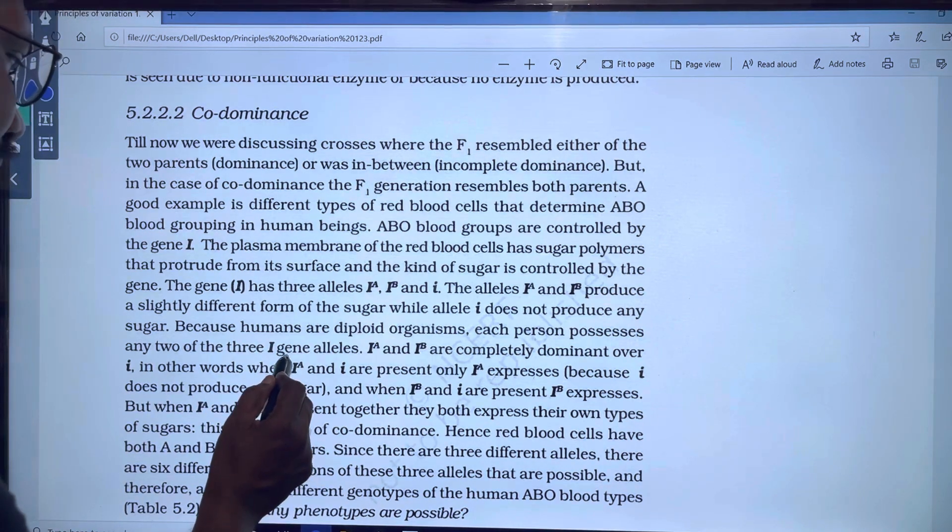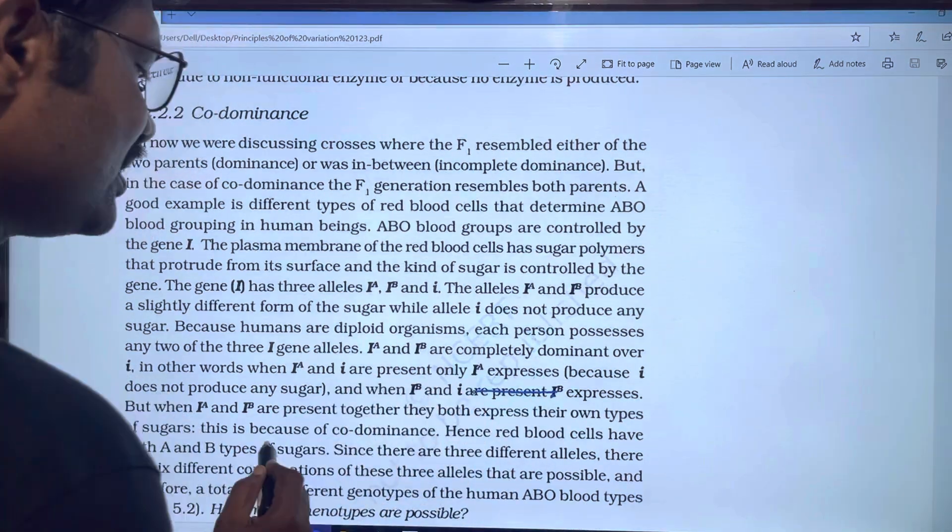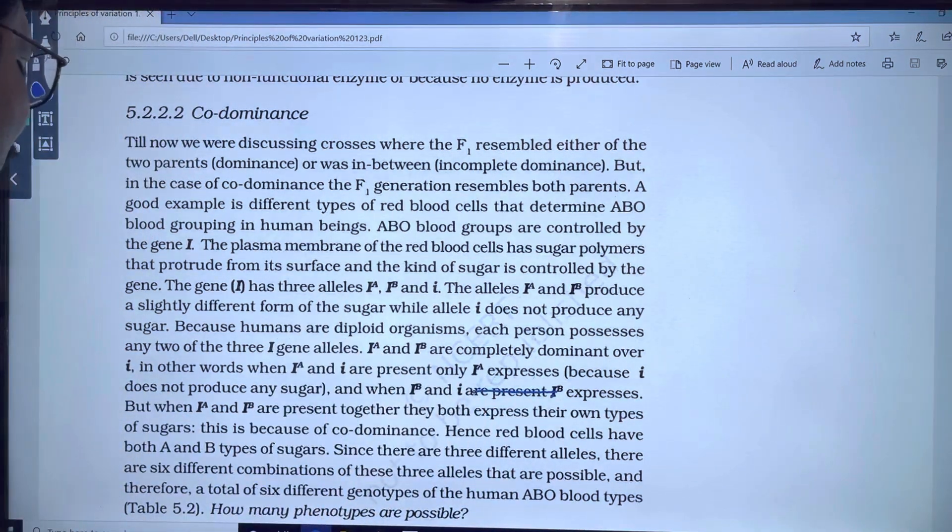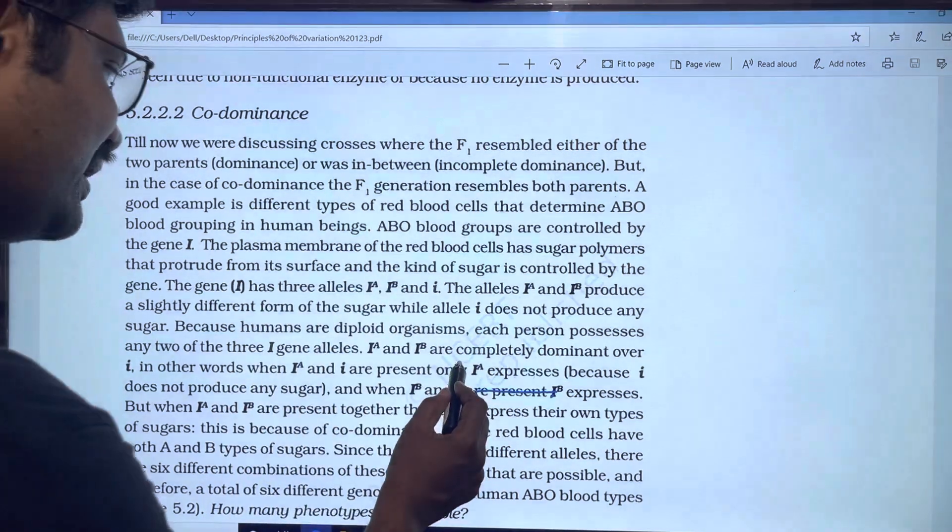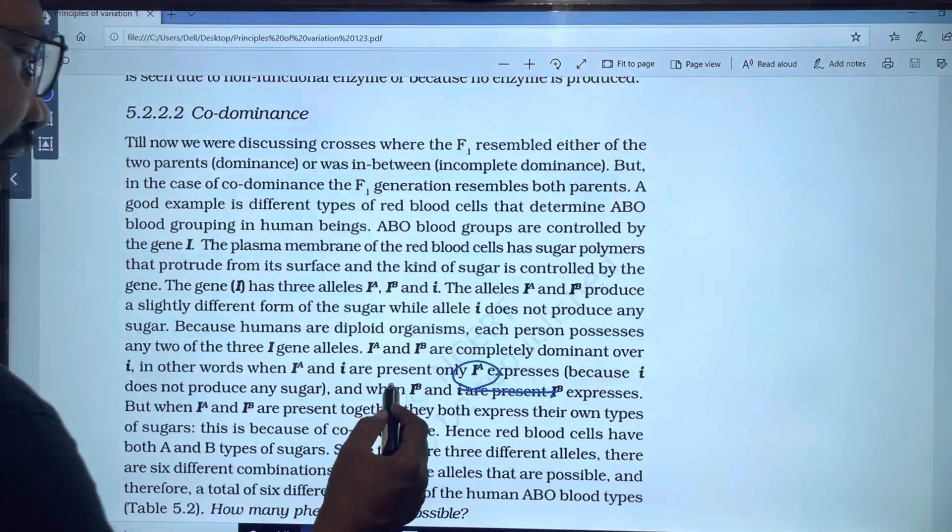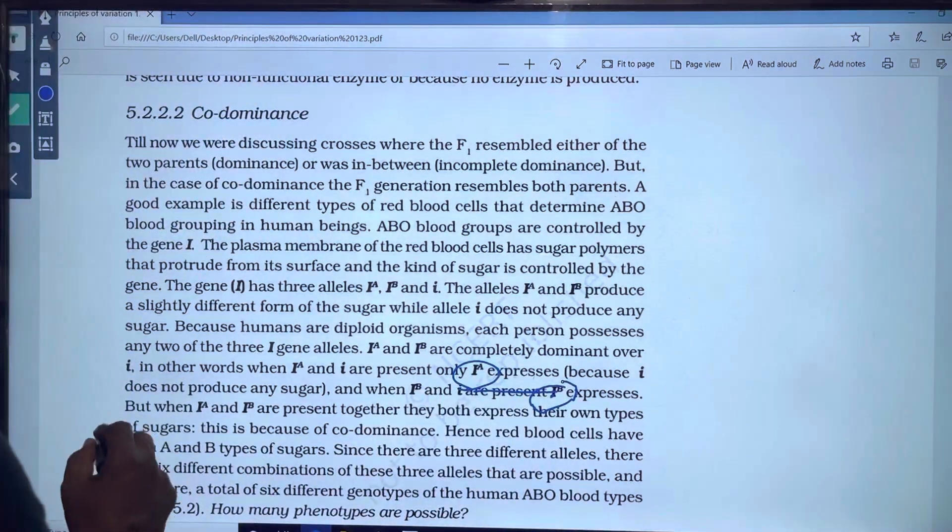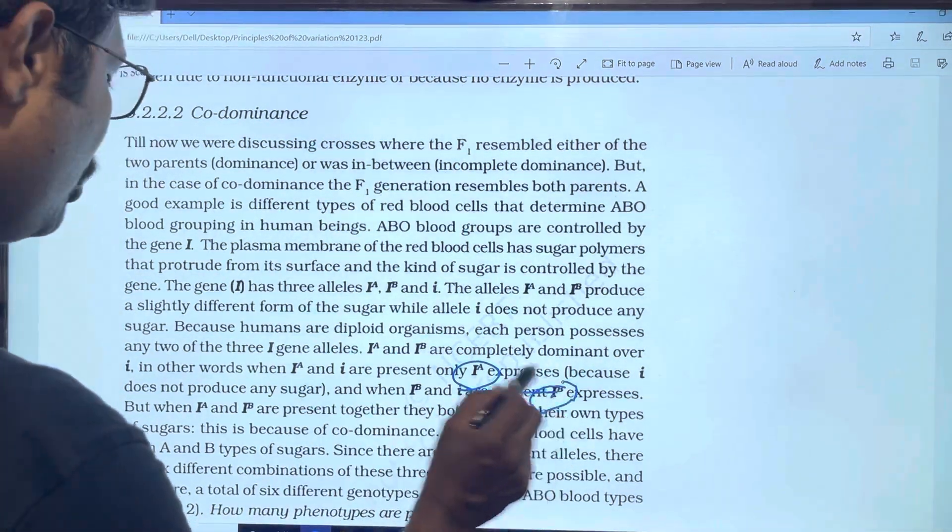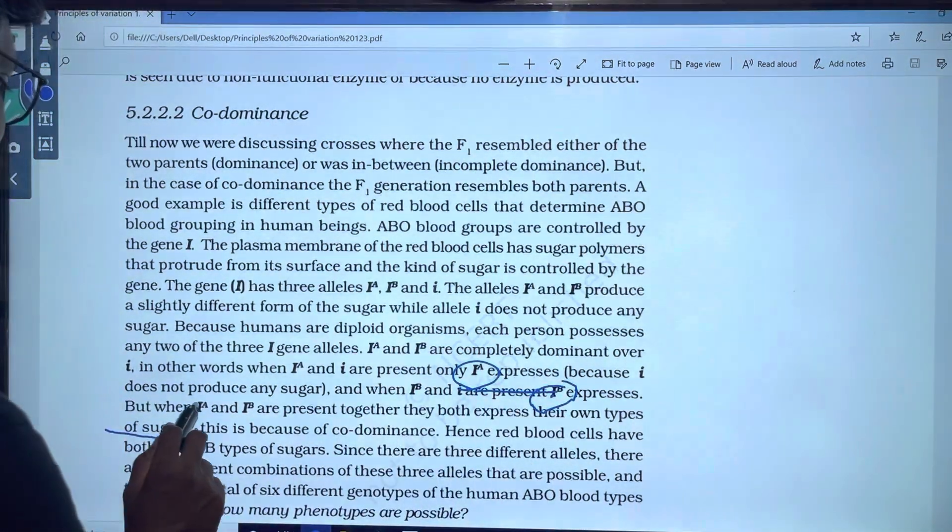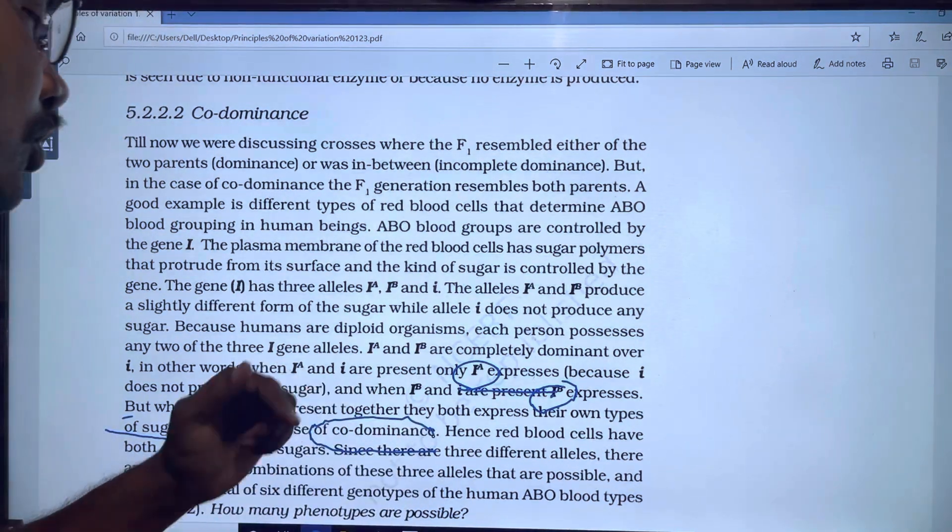In other words, when IA and I are present, only IA expresses. When IB and I are present, only IB expresses. But when IA and IB are present together, they both express their own type of sugars. This is very important. It is because of co-dominance.